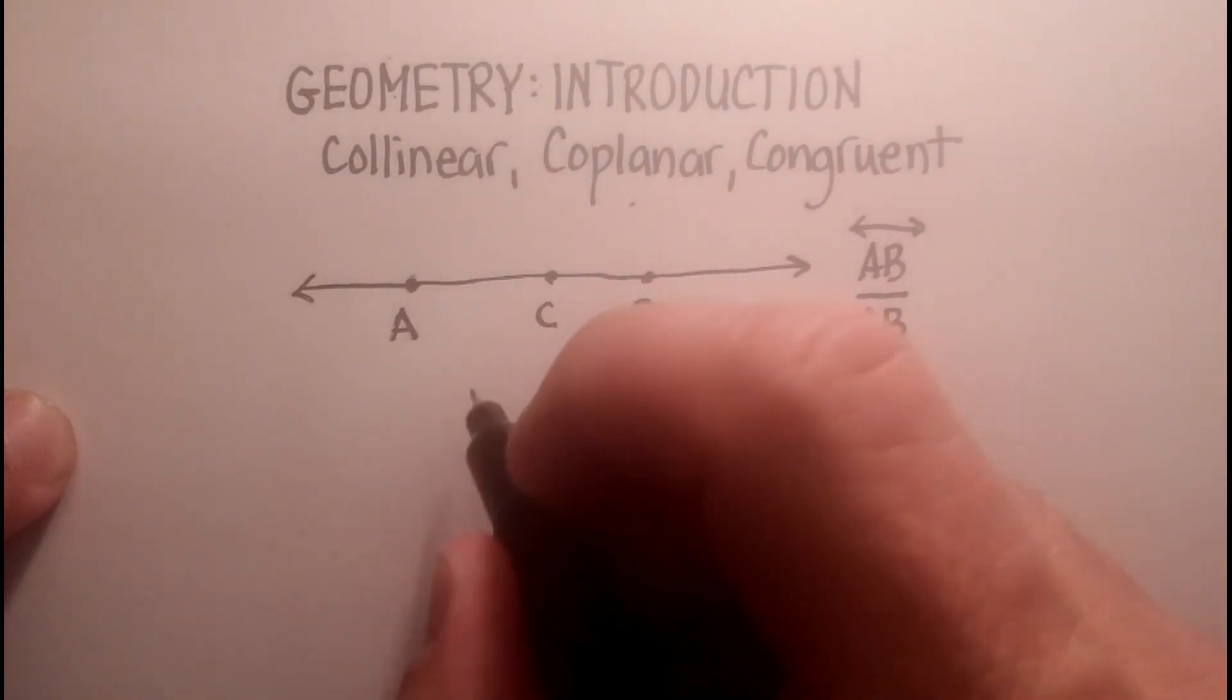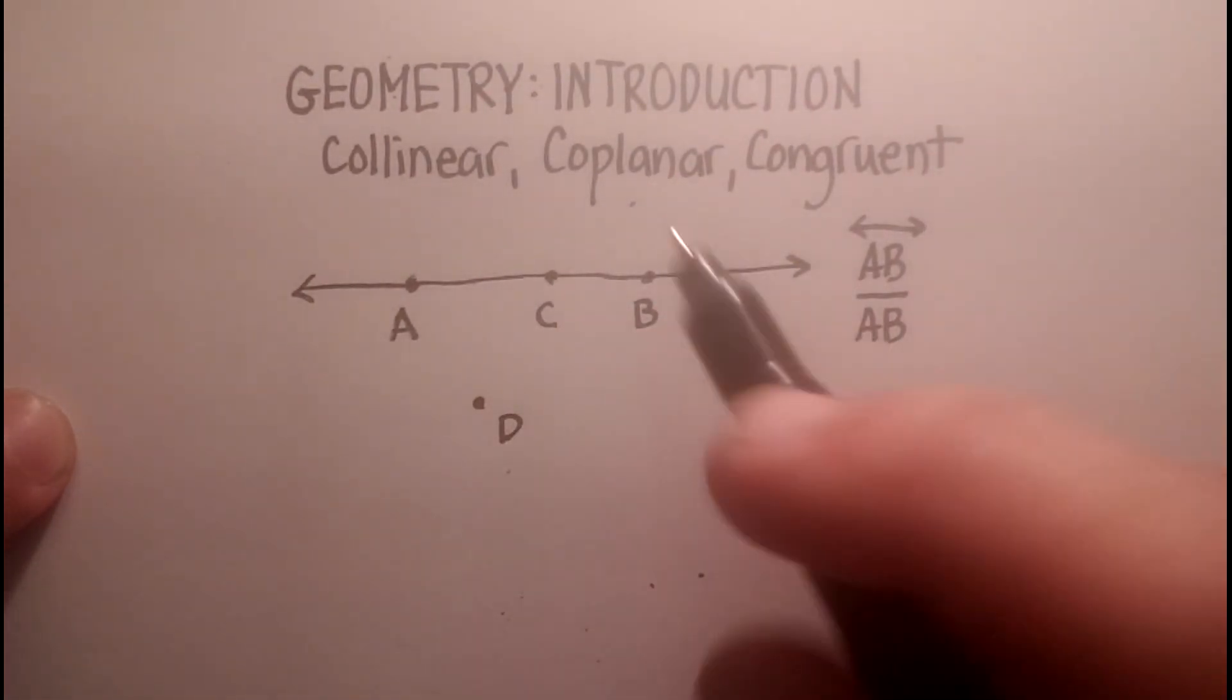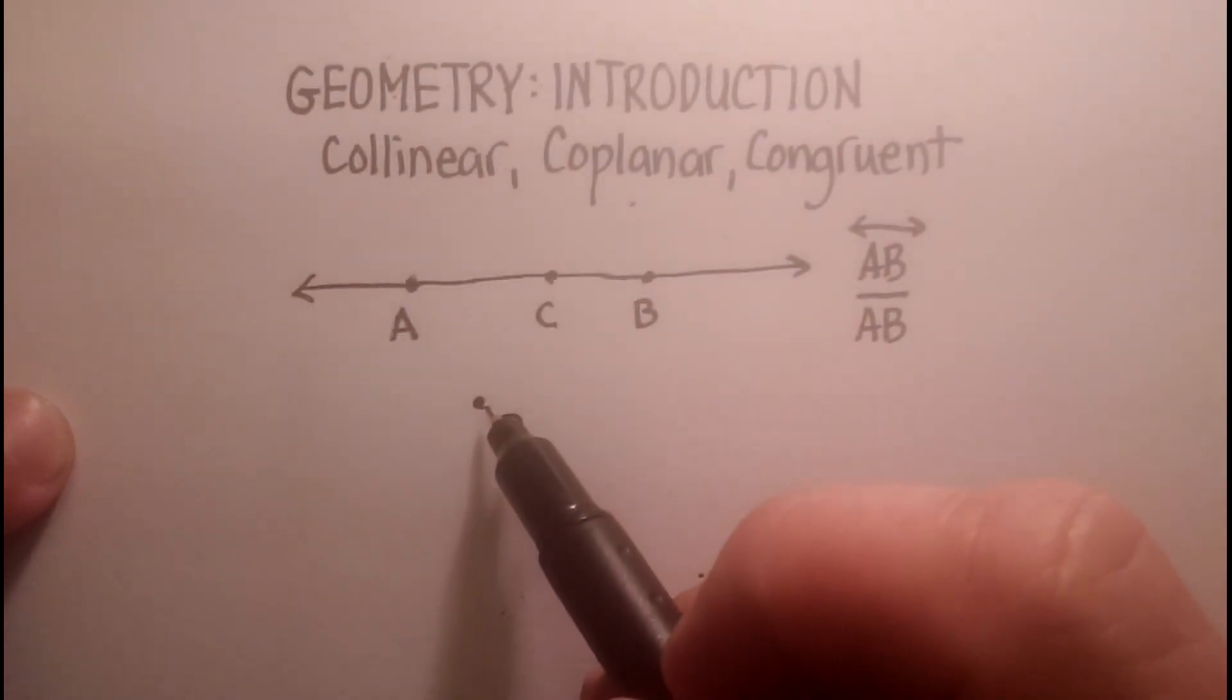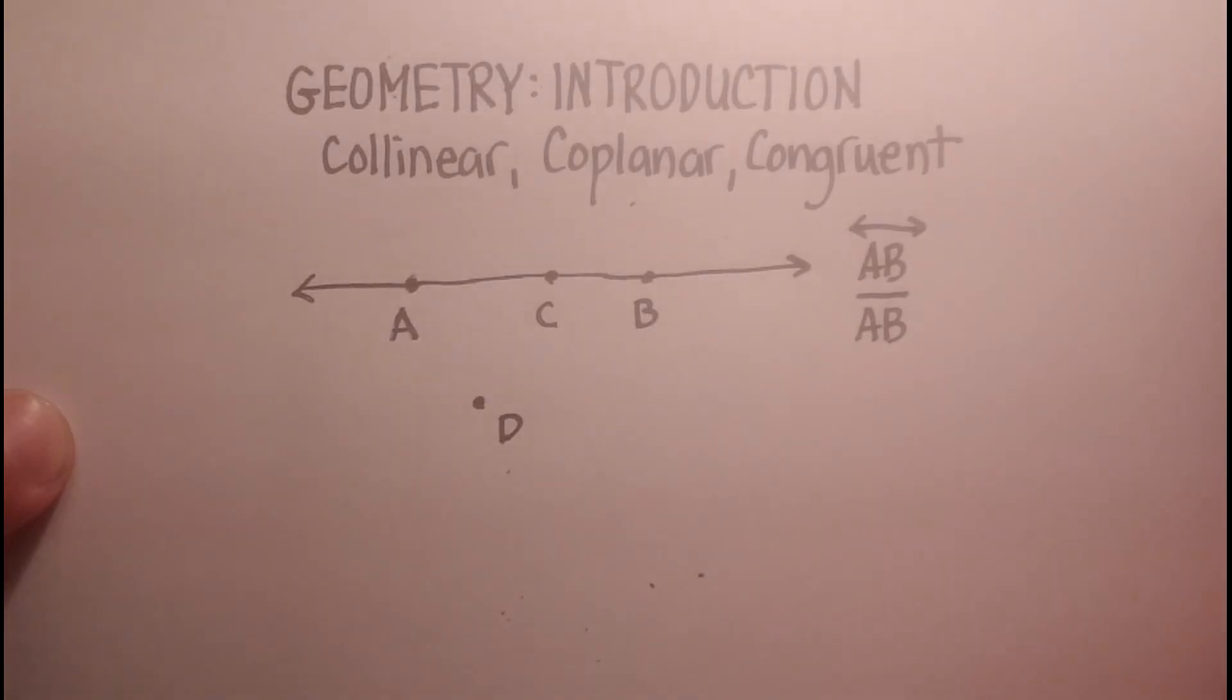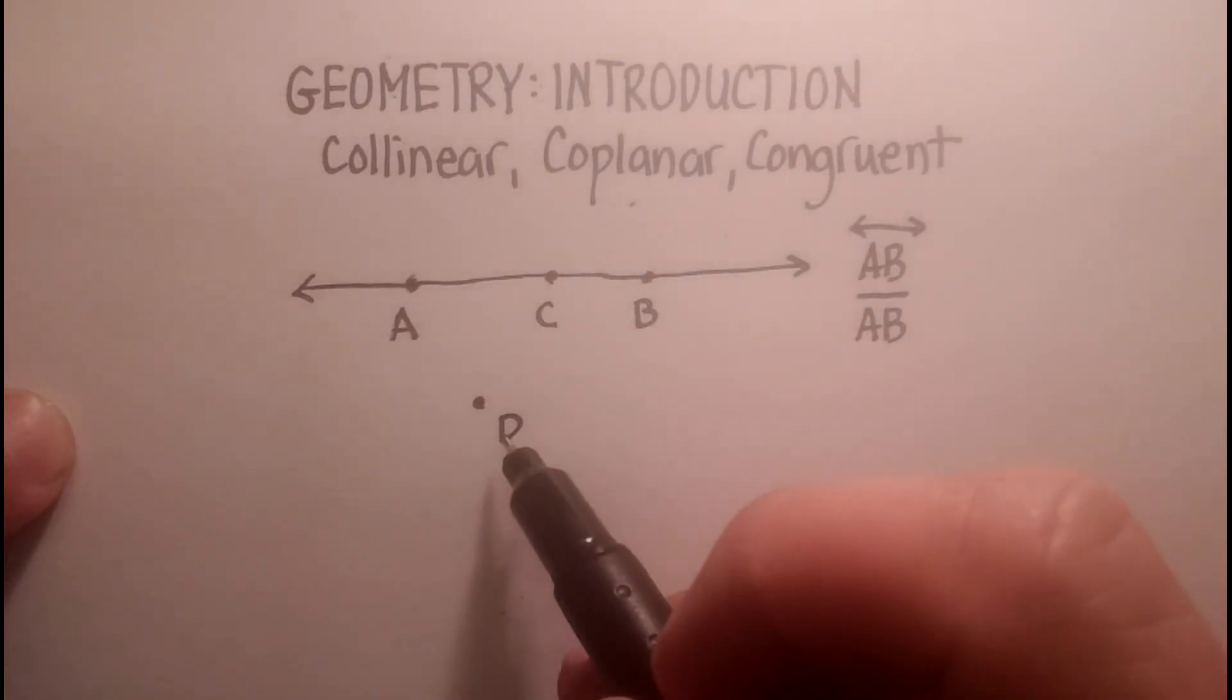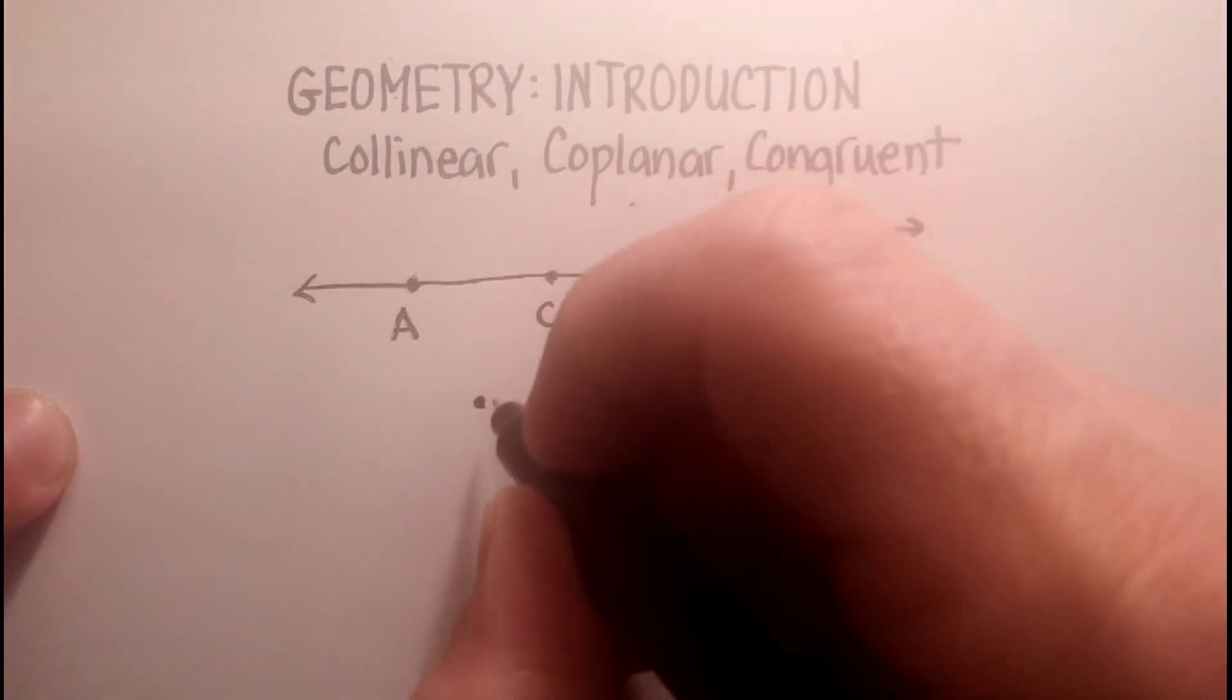If I have another point off that line, let's call that point D, I would say that D is not collinear with A, B, and C. But can I make point D collinear with one of those? I absolutely could. What I'd have to do is draw another line.